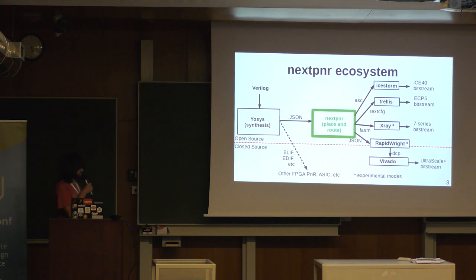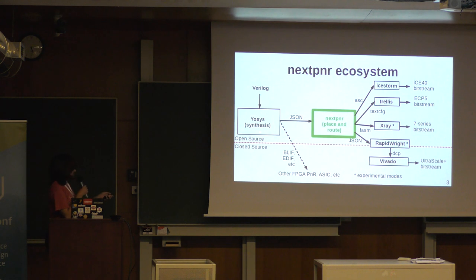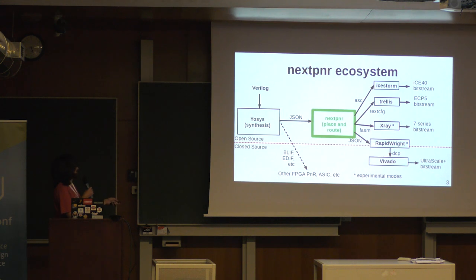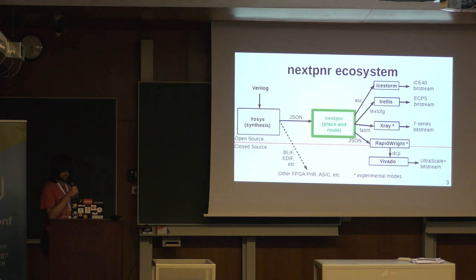This is just a rough overview of the ecosystem that's built up around NextPNR now. We have synthesis coming in from Yosys, we use Yosys's JSON format for netlist, but Yosys can also go into other place and route tools using older formats. Then we can use IceStorm, Trellis, X-Ray, RapidWright — all these routes are ways of generating bitstreams for the different devices that NextPNR supports.